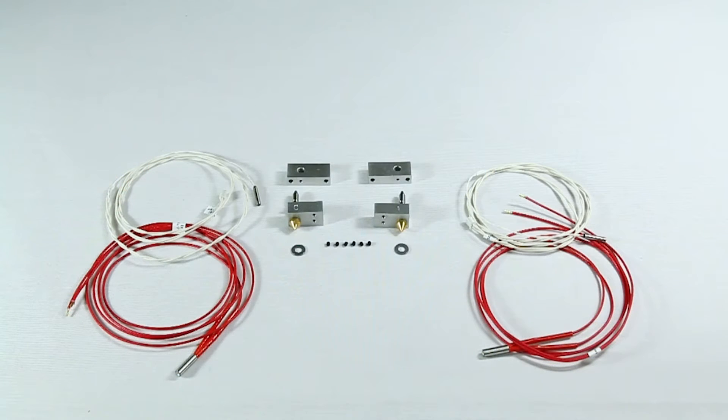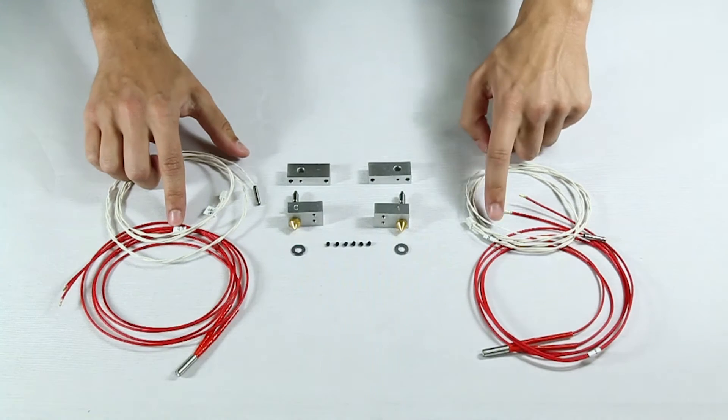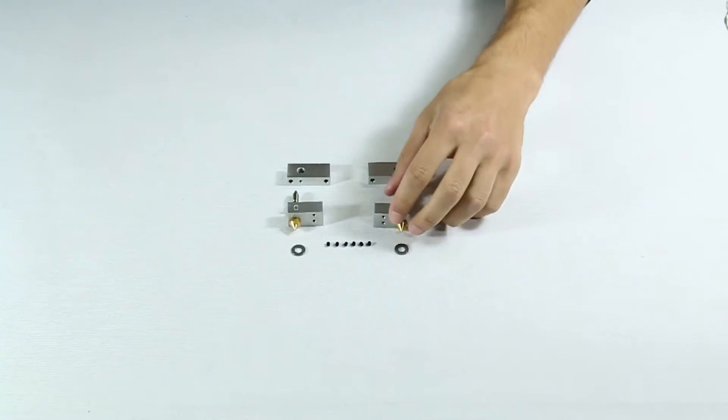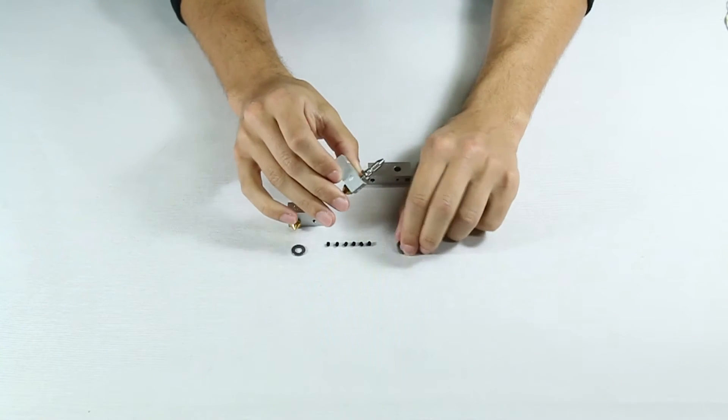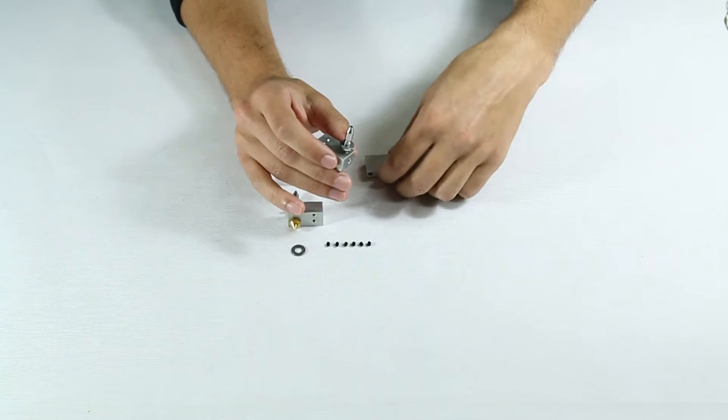And now we assemble these very important extruder components. Note that each hotend has been branded with either a 0 or a 1. Each label on the wiring must be marked with a 0 or a 1 by the user. Assemble the hotend and heatsink as shown here, and be sure to check the manual carefully for the correct order of the components.